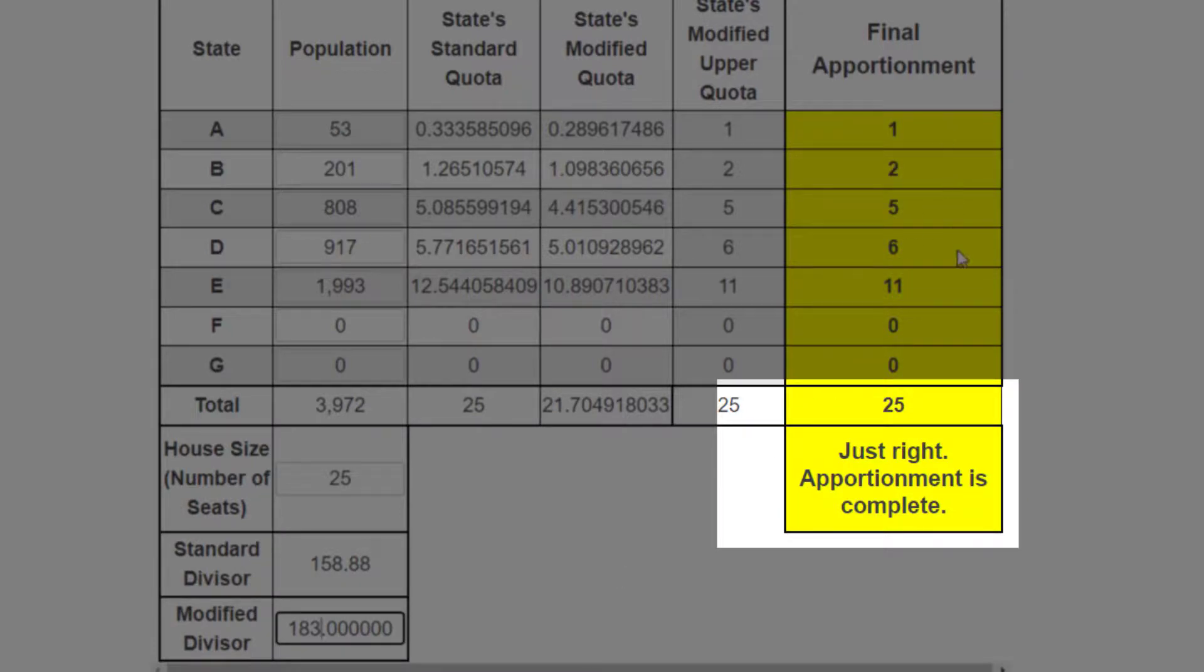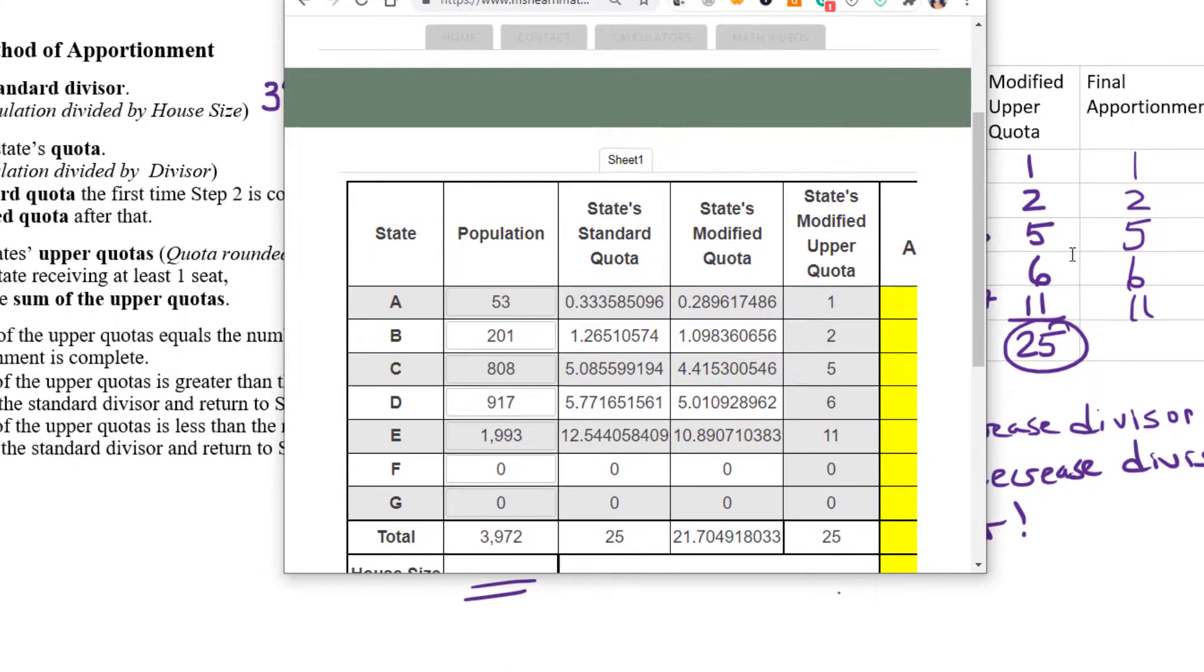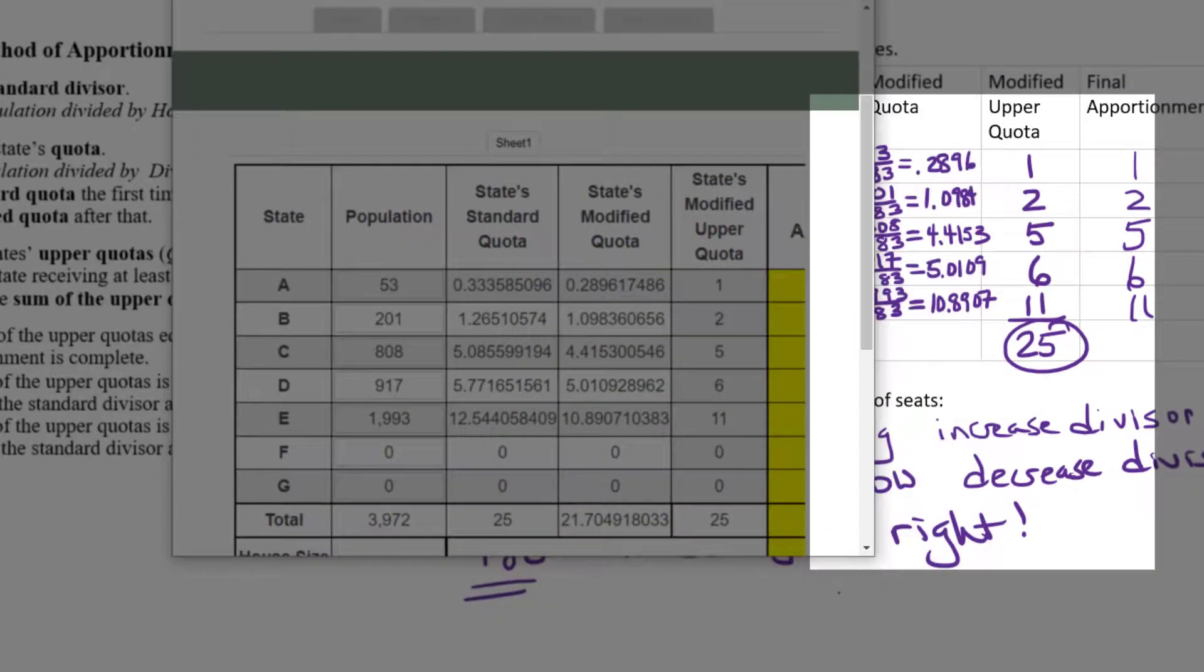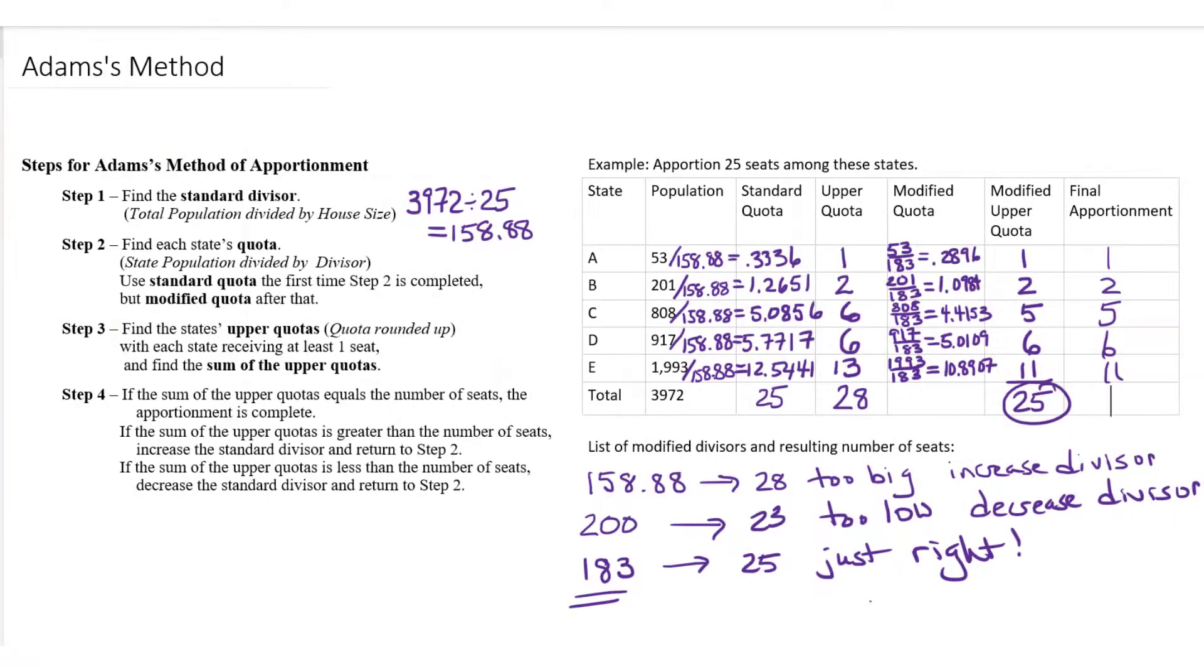I'm going to go up to 183 and you see it says 25 just right. Apportionment is complete. 1, 2, 5, 6, and 11, which is the same final apportionment that we got by hand. I hope you found this video helpful. If you did, please give it a thumbs up. That will help other students to find the video. And check out my other videos on Hamilton's, Jefferson's, and Webster's methods of apportionment.